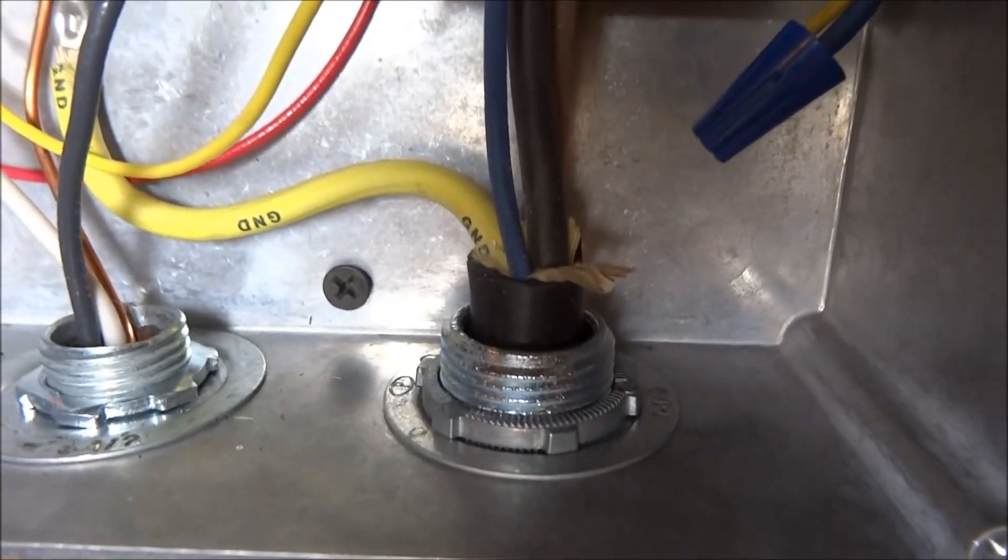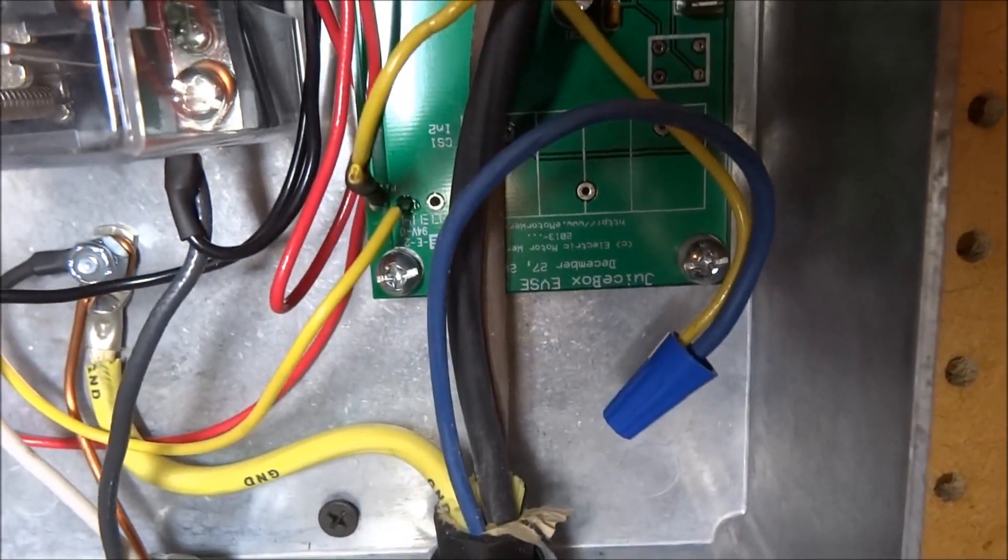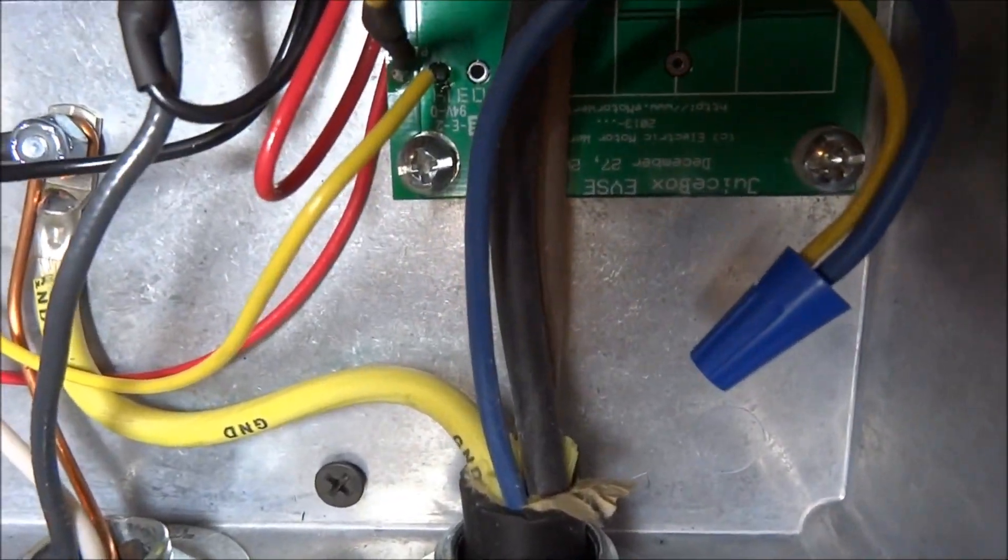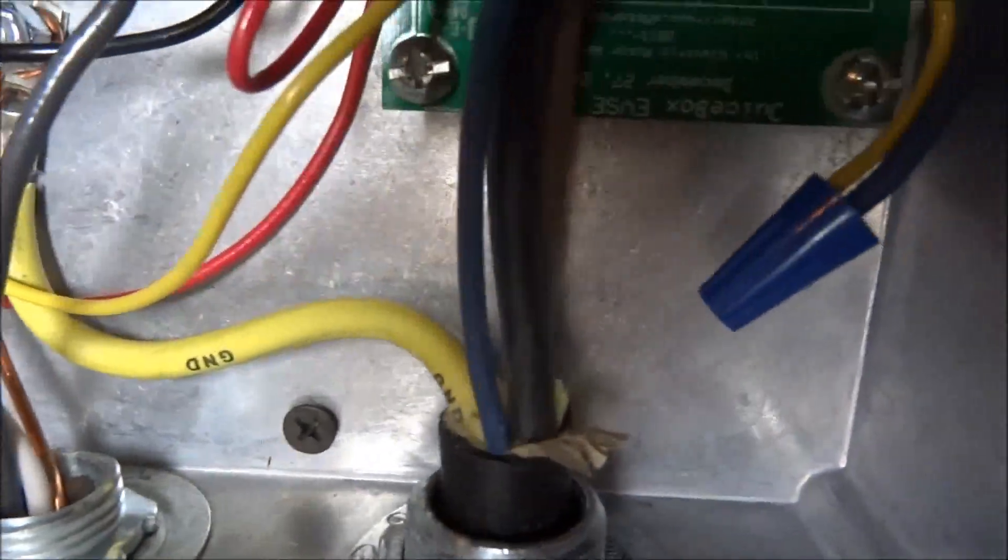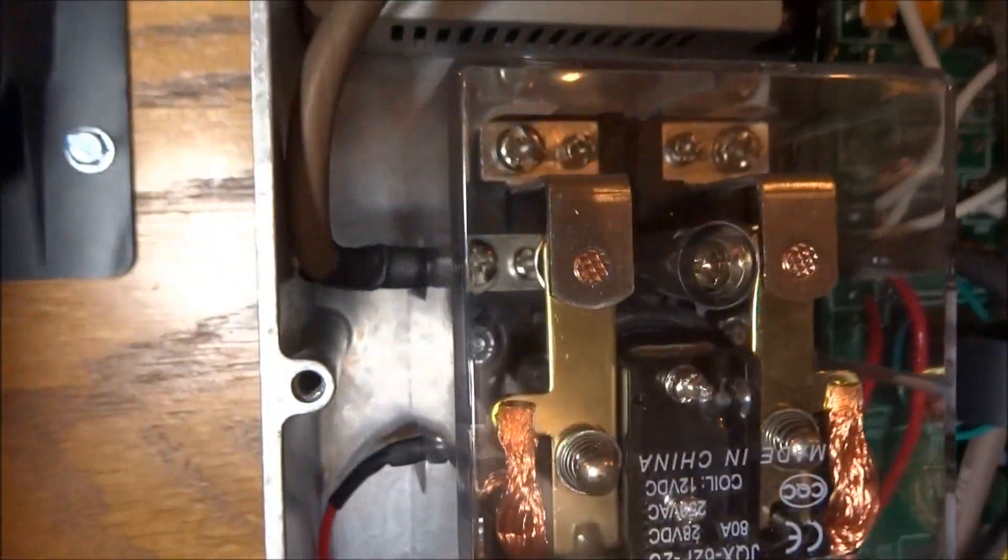And then here's your output cable. That blue wire is your pilot, at least in this case it is. This yellow one is marked as ground. And these two wires are your hot wires, and those go to the top part of your connector.